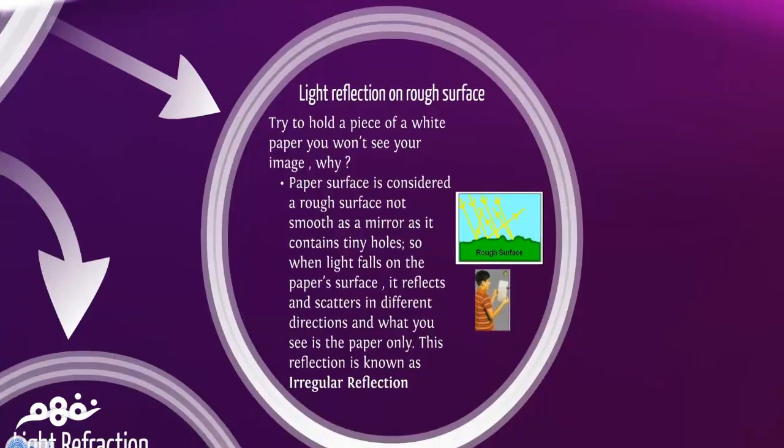Rough surface. Let's try this. Try to hold a piece of white paper. What will happen? You won't see your image. Why? Because paper surface is considered a rough surface, not as smooth as a mirror. It contains tiny holes. So when light falls on a paper surface, it reflects and scatters in different directions. And what you see is the paper only. This reflection is known as irregular reflection. So now we have two types of reflection: regular reflection on a smooth surface and irregular reflection on a rough surface.